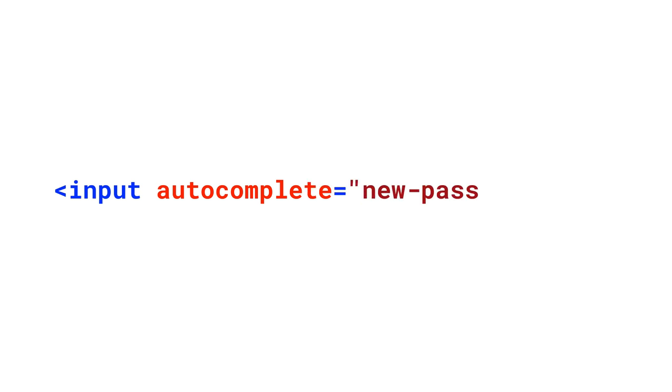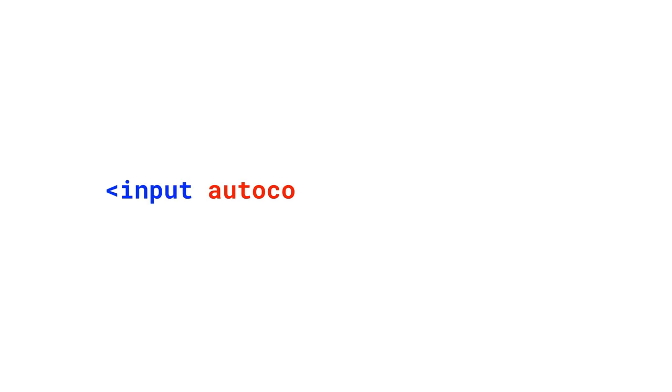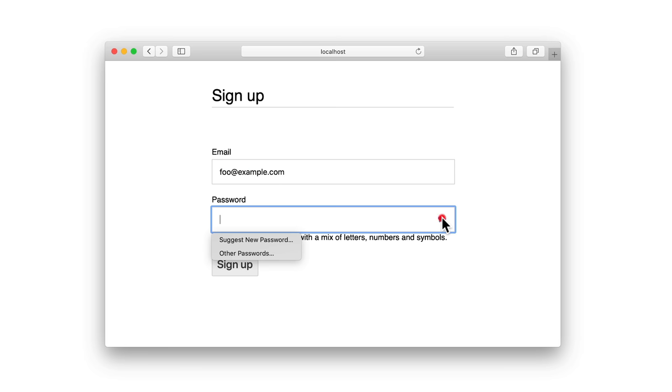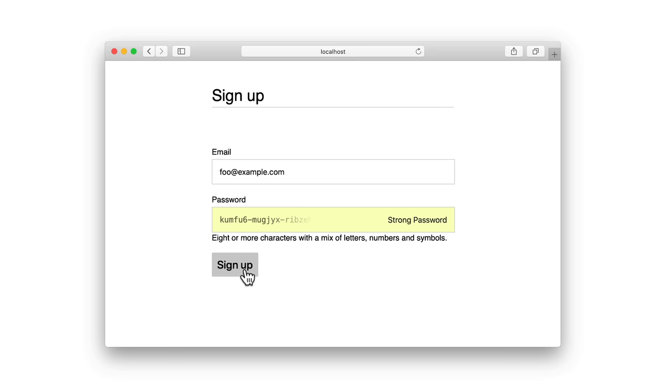Password managers work really well in modern browsers, syncing accounts across devices, across native and web apps, and for new devices. This means the single most important task for you is to make sure you code your forms correctly. If you do one thing after watching this video, please double check your HTML to make sure you're using the correct autocomplete values in your signup form. For signup forms, use autocomplete equals new-password for new passwords and autocomplete equals email for email addresses. Coding forms correctly enables browser password managers to understand your code in order to save and suggest strong passwords.